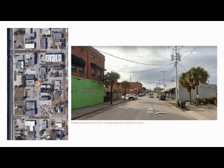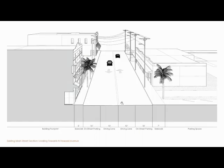Keeping these principles in mind, we move into the proposals and before-and-after sections. We start with the section of Main Street looking towards North Howard Avenue. The existing conditions showcase the good bones the street already has: an adequate amount of sidewalk and on-street parking. However, there's a lack of greenery and trees throughout — it seems the palm trees have been more resilient. There's also a series of awnings that provide little shading to the pedestrian because they don't extend far enough out to the sidewalk.